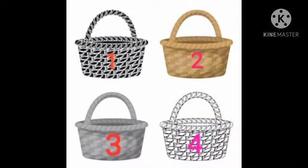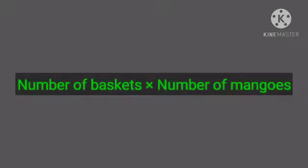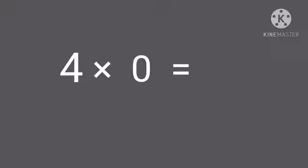Look here — I have four baskets and each basket is empty. In the first, second, third, and fourth basket I have zero mangoes. So tell me, how many mangoes are there in all? Let's find out. We have to multiply the number of baskets with the number of mangoes. We have four baskets and zero mangoes. So when we multiply four with zero, we get zero.